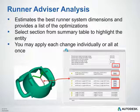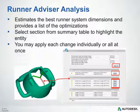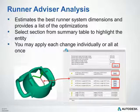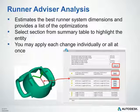When you run a runner advisor analysis, it will estimate the best runner system dimensions and provide a list of the optimizations in the summary table. From here, you can select a section from the summary table to highlight the entity — if you select it on the left, you can see that entity highlights in pink on the model. You may also apply each change individually or all at once by clicking the Apply button to the right.